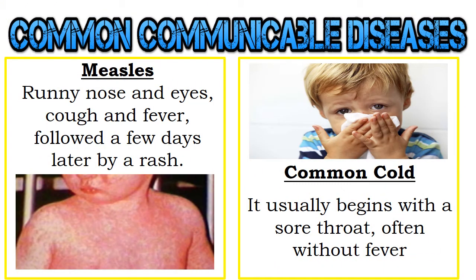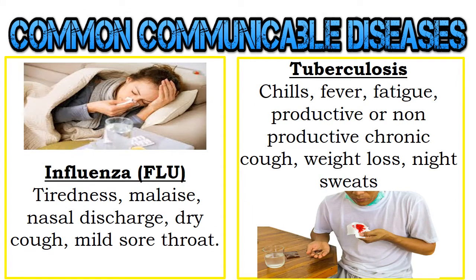Another airborne transmission is measles — you may have runny nose and eyes, cough and fever, followed a few days later by a rash. The next is the common cold, with droplet transmission. It usually begins with a sore throat, often without fever. Another droplet transmission is influenza or flu — you may experience tiredness, malaise, nasal discharge, dry cough, and mild sore throat.